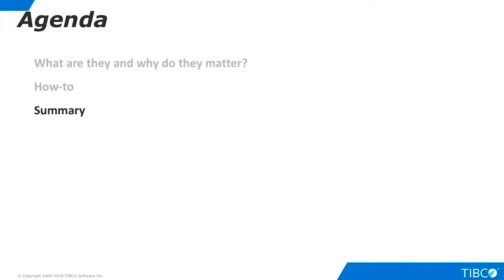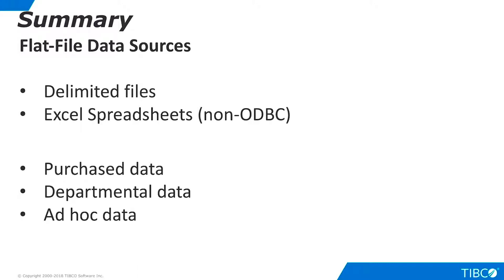Let's summarize what we have seen in this presentation. Typical flat file data sources used by TDV customers include delimited files and Excel spreadsheets that are not accessed via Open Database Connectivity, or ODBC. TDV provides a separate adapter for ODBC access to Excel. TDV also supports the use of XML files as a data source. However, since XML files are hierarchical structures that typically require transformation, we did not consider them in this demo.